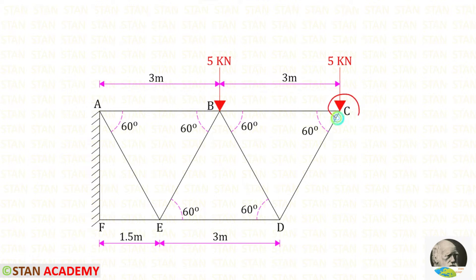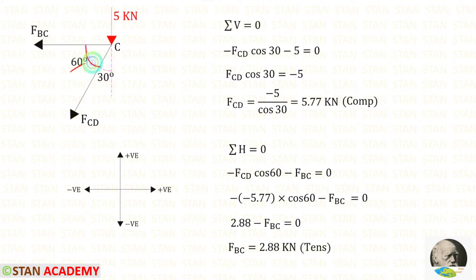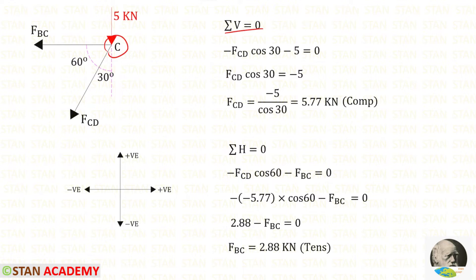First we have to take joint C because in this joint there are only two unknown forces — the member forces in CB and in CD. Also at point C we have a vertical load of 5 kilo Newton. The angle is given as 60 degrees, so we can easily find the complementary angle: 90 minus 60 gives us 30 degrees. At joint C, first we apply the rule Sigma V = 0, because when we apply this rule there will be only one unknown, that is FCD. FCD is inclined, and to make it vertical we need 30 degrees, so we multiply FCD with cos 30.